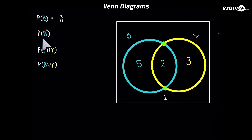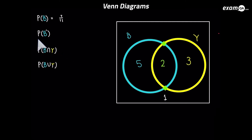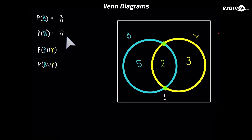Now let's look at the next one: not B. Think about which space is not B — you should have said the 3 and the 1, which is 4. This time it wants a probability, so we're not simply going to say 4. We're going to do 4 over the total, which is 4 over 11 — including the number on the outside.